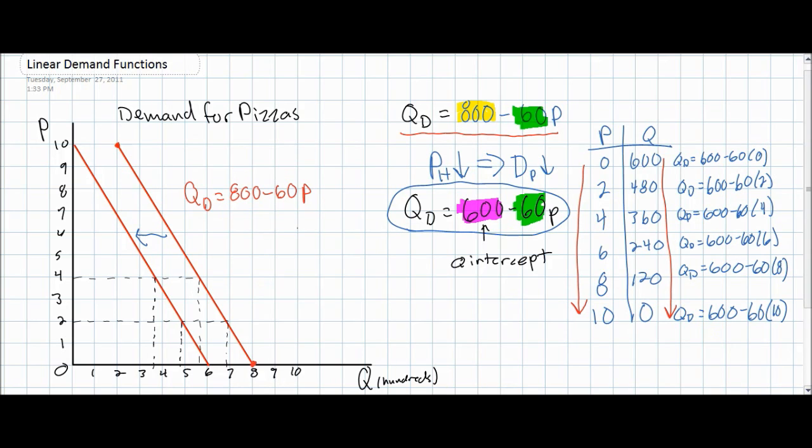So what are some other things that can cause the demand for pizzas to change? Well, you may recall from a previous video lecture that there are six non-price determinants of demand, which we summarize using the abbreviation T-O-E-I-S-S. T was for tastes and preferences of consumers, O was for other goods prices referring to substitutes and complements.